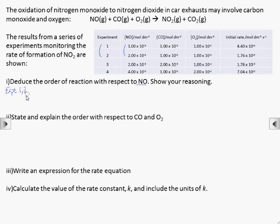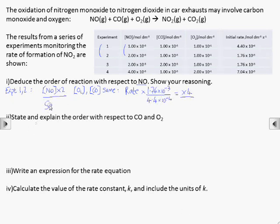Comparing the first and second experiments, we can see that only the concentration of NO has changed. The effect of doubling the concentration of NO is to increase the rate times 4. So the rate is proportional to the concentration squared. The reaction is second order with respect to NO.